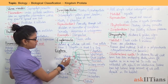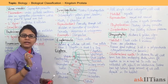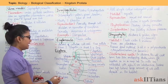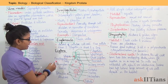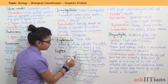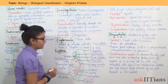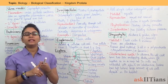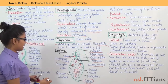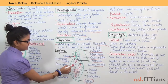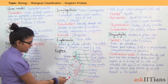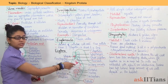Euglena has a stigma, which is an orange-red eye-spot type of structure. It also has a paraflagellar body, which is a type of swelling where both flagella are joined together. Inside these are paraflagellar bodies, and there are also pellicular striations present.